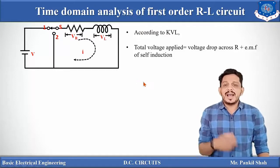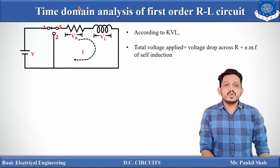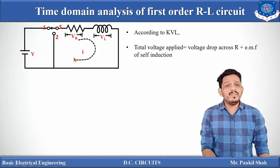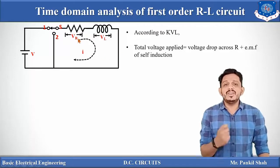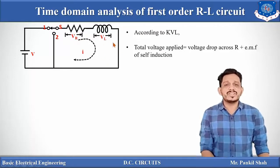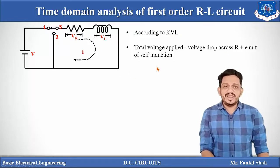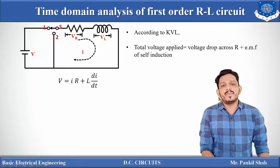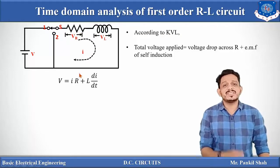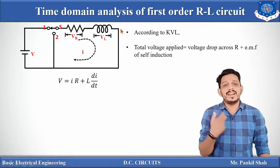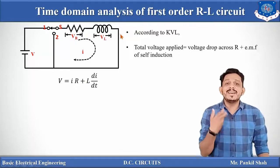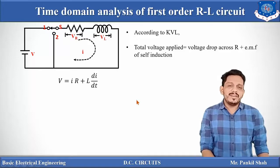Let us now see how this current increases. Applying KVL to this closed loop, the applied voltage V equals the voltage across the resistor plus the voltage across the inductor: V = VR + VL. We know that VR = IR and VL is the voltage across the inductor given by the self-inductance equation VL = L di/dt.